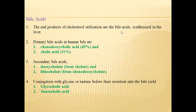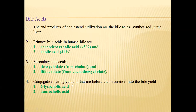Primary bile acids in human bile are chenodeoxycholic acid, which occupies 45%, and cholic acid, which accounts for 31% of bile acids. Secondary bile acids are deoxycholate from cholate, and lithocholate from chenodeoxycholate. Conjugation with glycine and taurine before secretion into the bile yields glycocholic acid. When bound to sodium ions, sodium glycocholate and sodium taurocholate are produced, and these are considered bile salts.